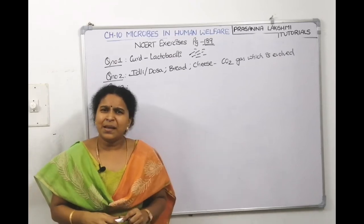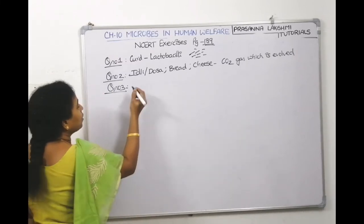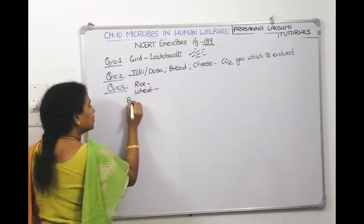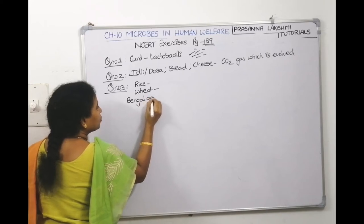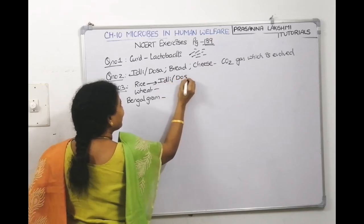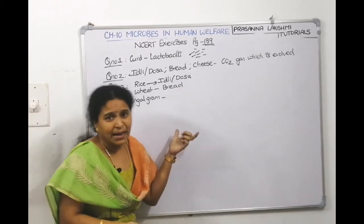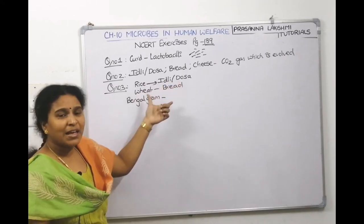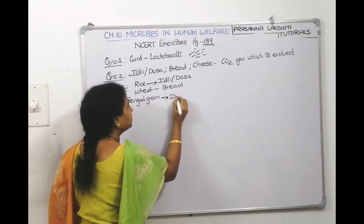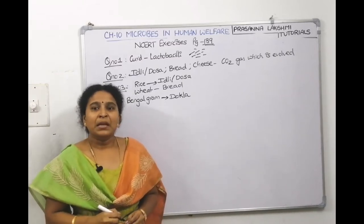Question 3: Name some traditional Indian foods where rice, wheat, and Bengal gram are used. For rice — idli and dosa. For wheat — bread. For Bengal gram/black gram — idli, dosa, and dhokla. Dhokla uses Bengal gram and is also a fermented dish.